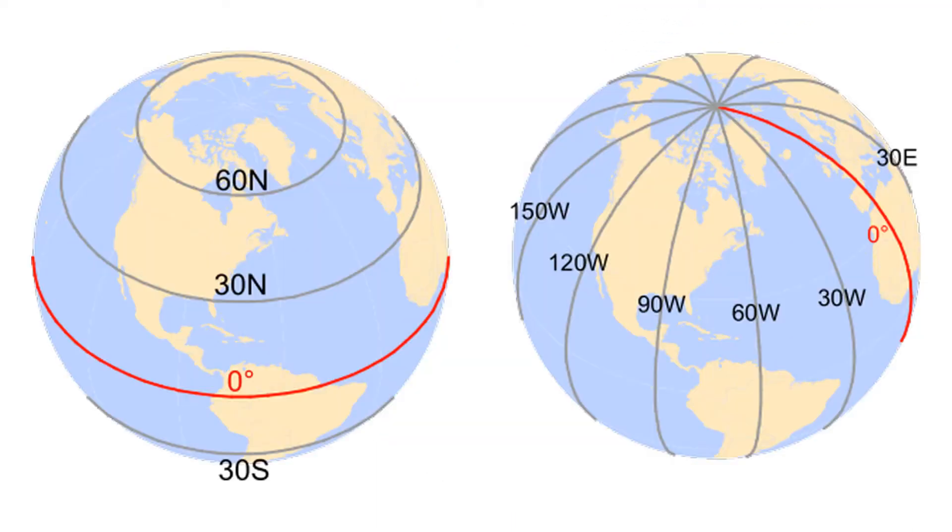If you want to mathematically locate any place on the earth's surface, you should take the help of latitude and longitude. In cartography, that is known as horizontal coordinate system.